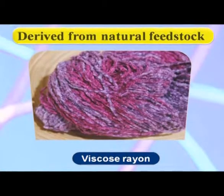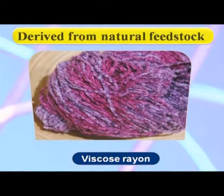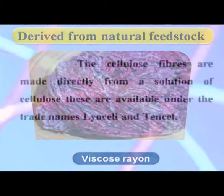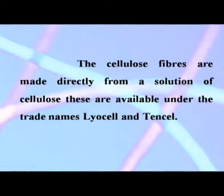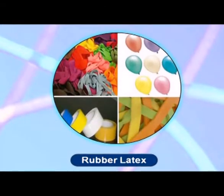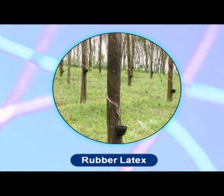Derived from natural feedstock: Viscose rayon was the first truly man-made fiber, made by converting cellulose into cellulose xanthate, then dissolved and made into fiber, which was regenerated into cellulose fiber called Viscose rayon. These cellulose fibers are made directly from a solution of cellulose and are available under the trade names Lyocell and Tencel. Rubber fiber, another natural feedstock, is made from rubber latex.